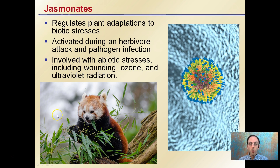Jasminates regulate plant adaptations to biotic stresses, and they can be activated during herbivore attack or pathogen infection. This is an example of something that can be upregulated in times of stress to the plant.